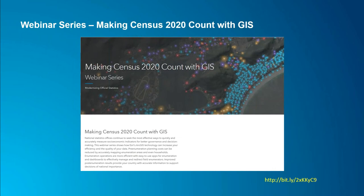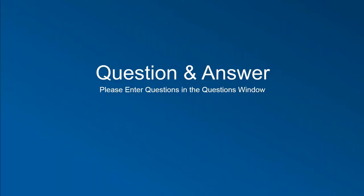Before we go to our Q&A period, this has been the second in our webinar series on Making Census 2020 Count with GIS. You can look at the website at the lower right to register for another webinar coming up October 3rd on the SDGs and dissemination. You can also view recordings of this webinar and previous webinars on this site. Now we're going to invite you to ask any questions — you can put those into the questions window.